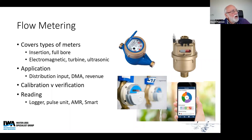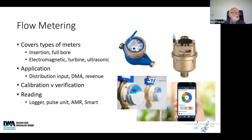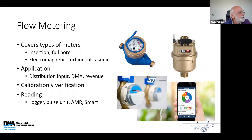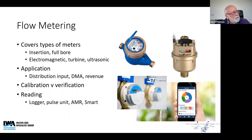There's a section on flow metering covering different types of meters — insertion, full bore, and then electromagnetic, turbine, or ultrasonic — different areas of application starting at the top of the system at the distribution input meters, DMA meters, and then revenue meters. It draws out the difference between calibration and verification of meters, and gives definitions for pieces of kit that help with reading of meters such as loggers and pulse units. And then into the area where we're moving into automatic meter reading and smart meters — a difficult area where you want to be careful of the marketing, as nearly all manufacturers will call their meters smart.